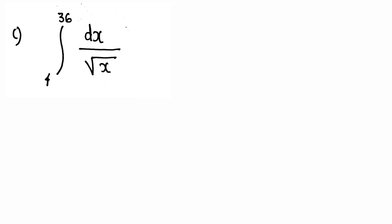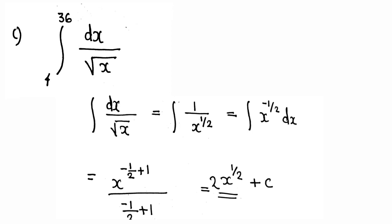Next question: integral from 4 to 36 of dx divided by root x. First, we note that root x can be written as x raised to 1 by 2, so the integral of 1 by root x is equal to the integral of x raised to minus 1 by 2 dx. That equals x raised to minus 1 by 2 plus 1, divided by minus 1 by 2 plus 1, which simplifies to 2x raised to 1 by 2, or 2 times root x plus c.